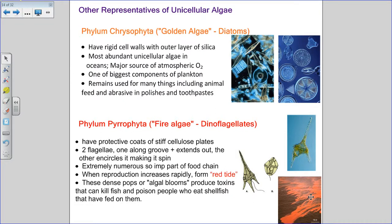During red tides, when dinoflagellates are eaten by mussels or other shellfish it can be toxic to them, and people who eat those shellfish can become very sick as well. When there's an algal bloom, there's usually a period where you're not supposed to eat shellfish or other things obtained from that area because they're toxic.